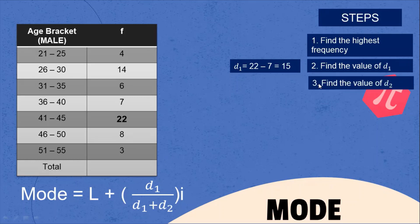Next, find the value of D₂. D₂ is the highest frequency minus the frequency below it. That is 22 minus 8, which equals 14. So D₂ = 14.